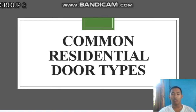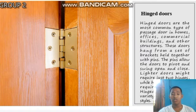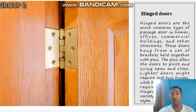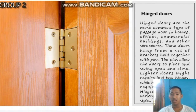The next topic is common residential door types. First are hinged doors. Hinged doors are the most common type of passage door in homes, offices, commercial buildings, and other structures. These doors hang from a set of brackets held together with pins, which allow the doors to pivot and swing open and close. Lighter doors may require just two hinges, while heavier doors might require three or four. Hinged doors come in a variety of materials and styles.